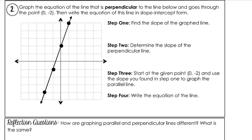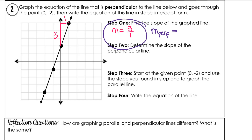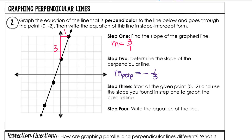Graph the equation of the line that is perpendicular to the line below and goes through the point (0, negative 2). Step 1 is to find the slope of the graphed line. It looks like we're going up 3 and to the right 1, both positive directions, so the slope is positive 3 over 1. For the perpendicular slope, we change the sign and flip the fraction. Our previous slope was positive 3 over 1, so the perpendicular slope is negative 1 over 3. To graph our line, we start at (0, negative 2) and go down 1 and to the right 3, or up 1 and to the left 3.